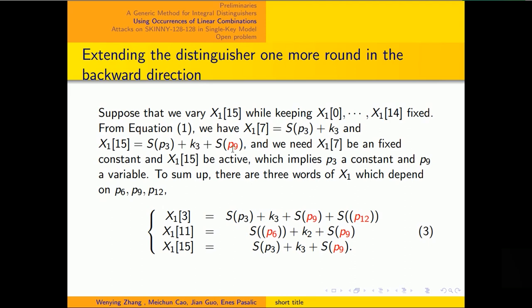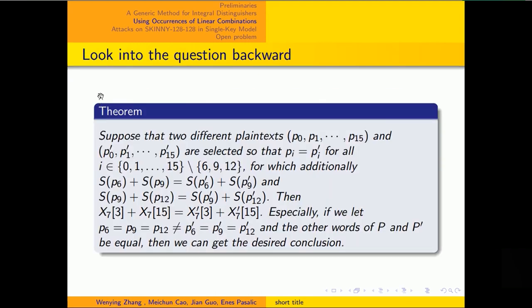Except X1[15], there are two words, X1[3] and X1[11], that depend on P9. So we have to add two constraints. To sum up, we have the following theorem.